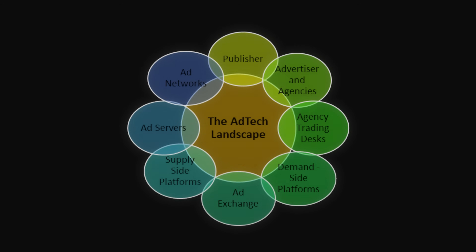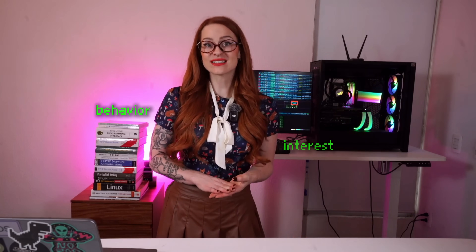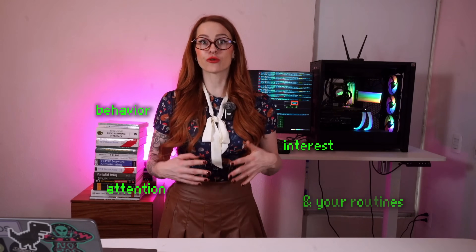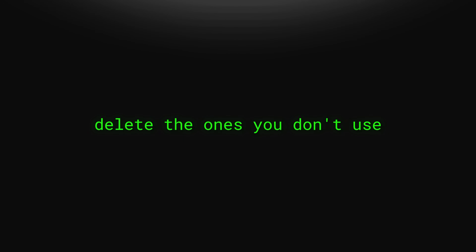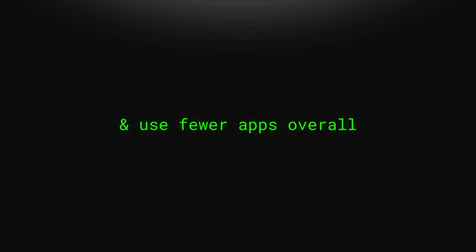And then there's ad tech — the invisible network that connects your apps and websites to companies you've never even heard of. They trade your behavior, interests, attention, and your routines like currency. So how do you shrink a shadow this big? You starve it. You limit data at the source: limit permissions, create fewer accounts, delete the ones you don't use, stop giving every app the same email and phone number, and use fewer apps overall.